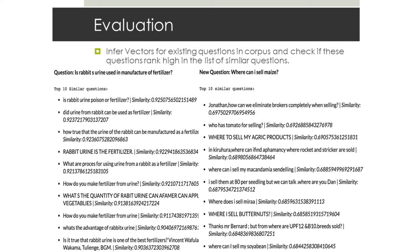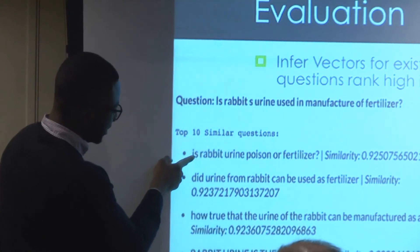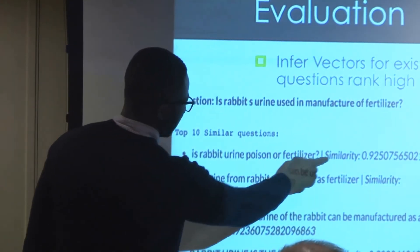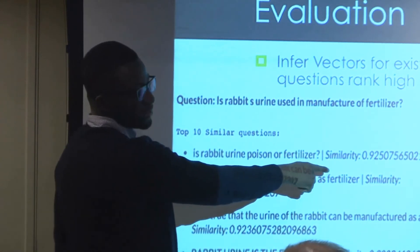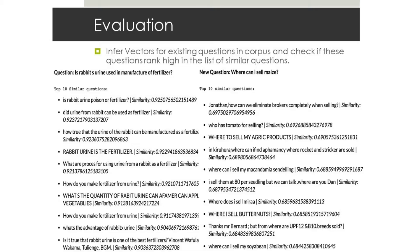Doc2Vec was quite good. I evaluated it by inferring vectors for existing questions in the corpus and checking that those questions ranked high in the results list. For instance, the question 'Is rabbit urine used in the manufacture of fertilizer?' - which actually existed in my database - returned 'Is rabbit urine poison of fertilizer?' as very similar. The similarity score is cosine similarity. You also get 'What are the processes of using urine from a rabbit as a fertilizer?' - these are very good results.